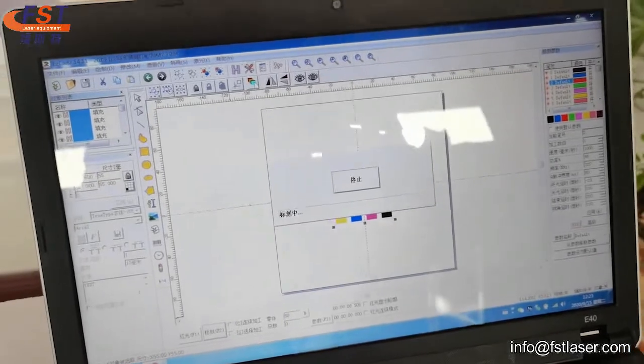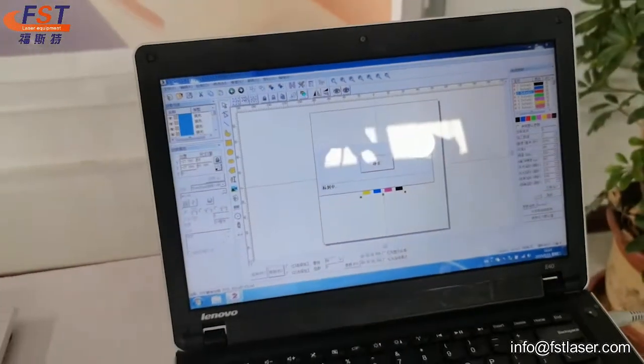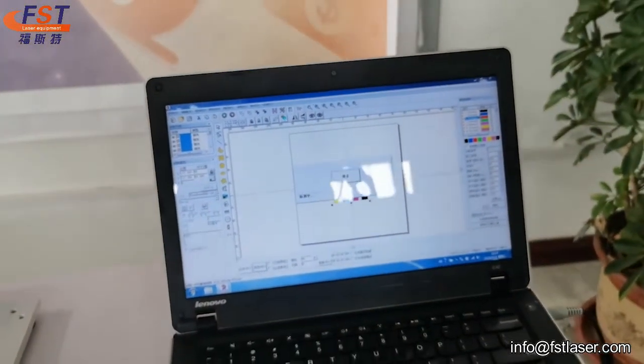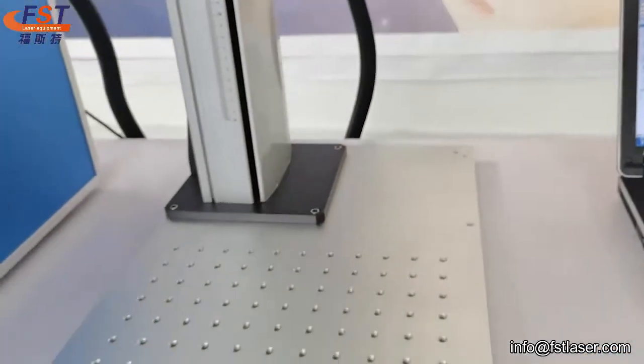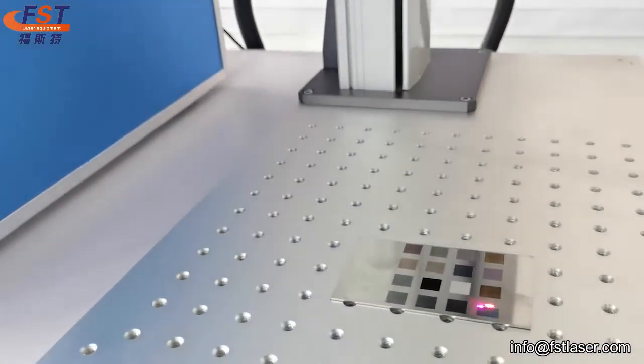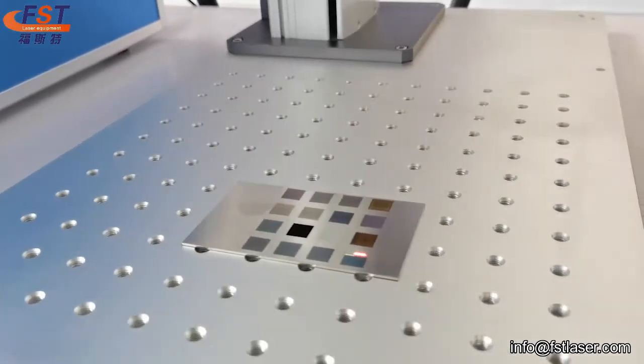And then for marking all the color, you can see clearly it's very easy to operate. It's very easy to mark the color on stainless steel. It's very easy and very fast.